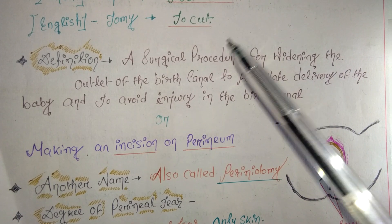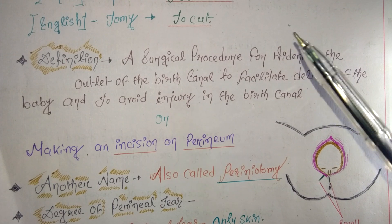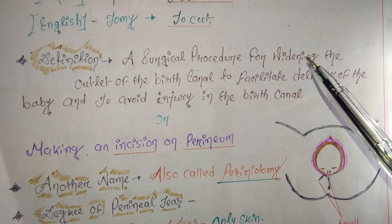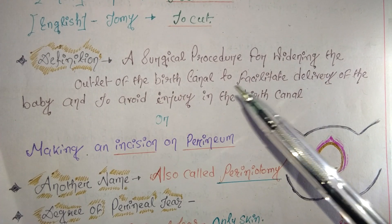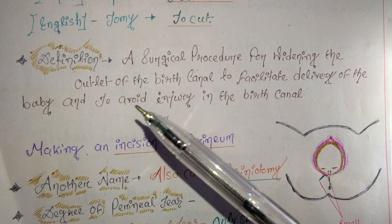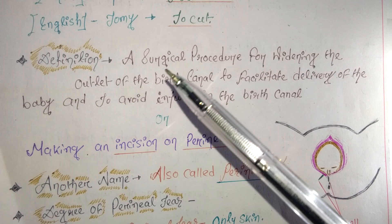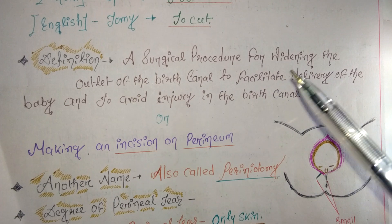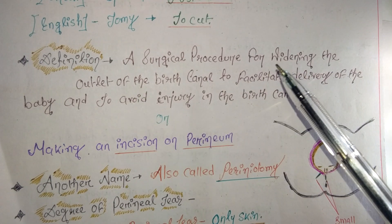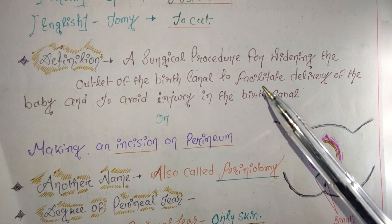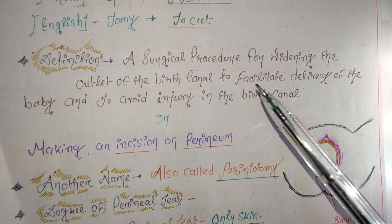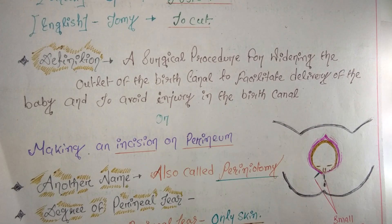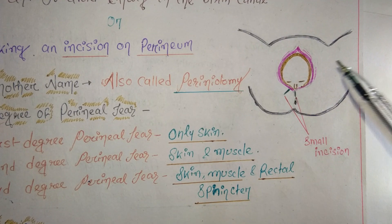Now you may ask: why do we need to cut the pubic or perineal area during labor? Episiotomy is a surgical procedure for widening the outlet of the birth canal to facilitate — meaning to ease — delivery of the baby and to avoid injury in the birth canal.